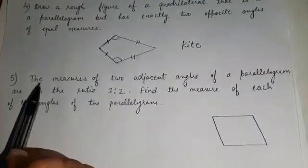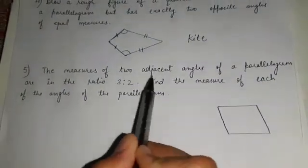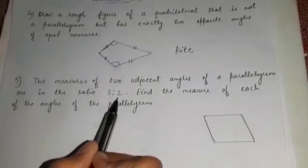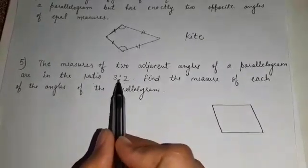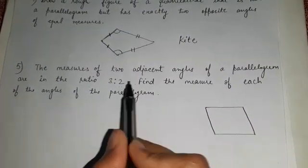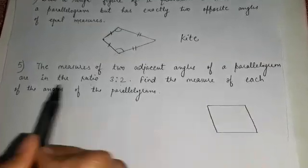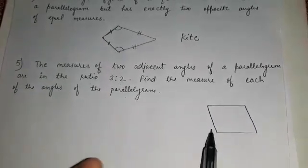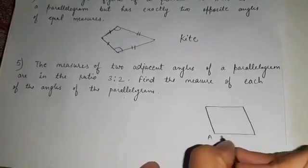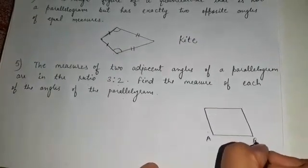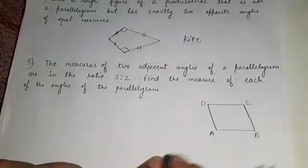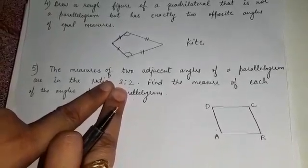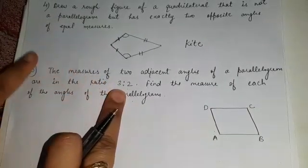Now the next question is: the measures of two adjacent angles of a parallelogram are in the ratio 3:2. The adjacent angles are given in ratio 3:2. Find the measure of each of the angles of the parallelogram. I have drawn a rough figure of a parallelogram here.